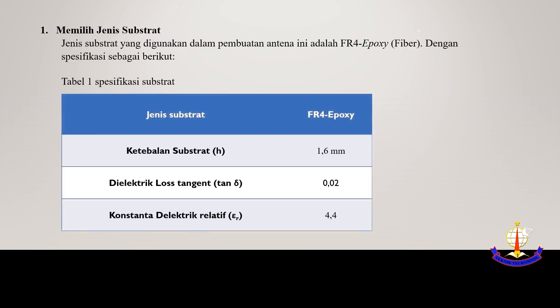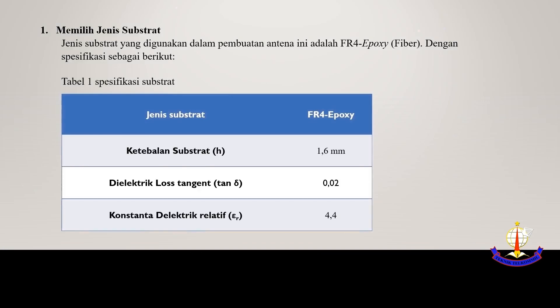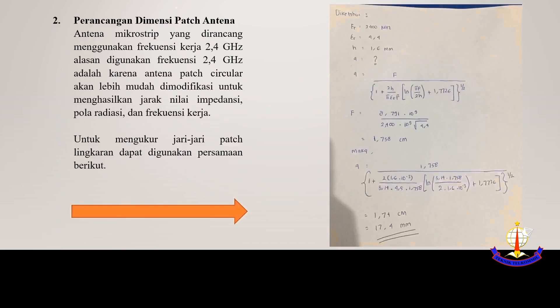Spesifikasi substrat yaitu: ketebalan substrat 1,6 mm; dielektrik loss tangen 0,02; konstanta dielektrik 4,4. Selanjutnya adalah perancangan dimensi patch antena. (Substrate specifications: substrate thickness 1.6 mm, dielectric loss tangent 0.02, dielectric constant 4.4. Next is the antenna patch dimension design.)